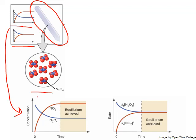Starting at time zero, we have only N2O4 in our tube. The blue line shows the N2O4 concentration, while the red line starts at zero concentration for the NO2 product. This influences the rates: we start with a relatively high rate for the forward process (blue line), but because we have no nitrogen dioxide, the rate for the reverse process starts at zero.